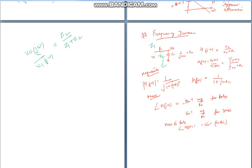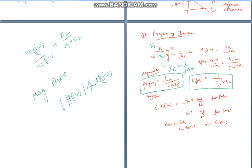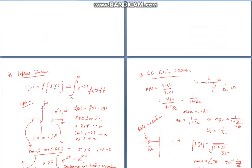Transfer function is given as 1 divided by 1 plus j omega RC. We can divide this in two parts. One is magnitude, other one is phase. Magnitude is given by h j omega 1 by square root RC square. Phase is given by minus 10 inverse imaginary part divide by real part, which is minus tan inverse omega RC. This is the frequency domain representation of circuit.